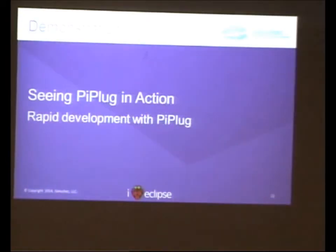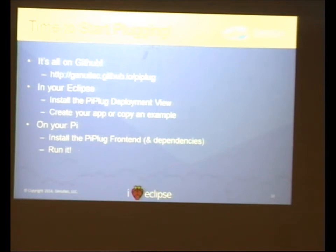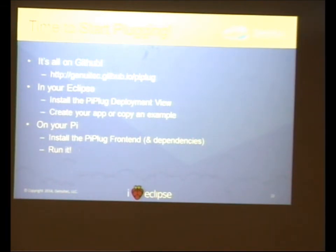Going back to the presentation to finish up — if you're interested in playing around with it, we have everything up on GitHub. You'll find the URL there. In Eclipse you just have to install the view, download a couple of sample apps if you want, then get the front end onto your Raspberry Pi including its dependencies and start playing around with it. If you have any contributions, we'd love to see them on GitHub.